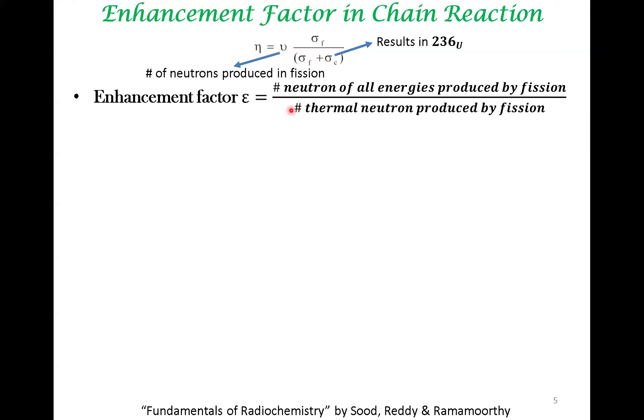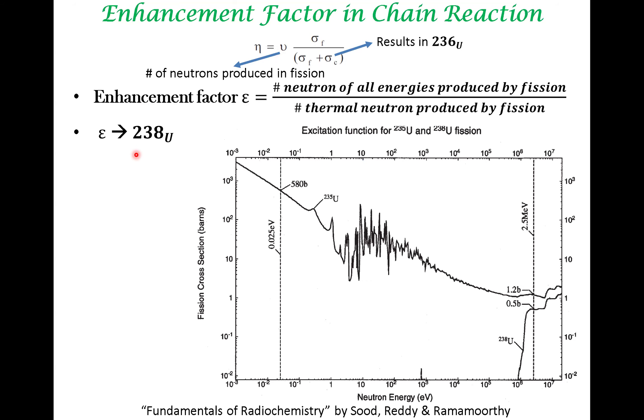We define an enhancement factor in the following manner: neutrons of all energies generated by fission divided by thermal neutrons produced by fission. Why is this important? If you have high-energy neutrons, this increases the cross-section for fission in U238. What we are referring to is this regime. When you have high-energy neutron, although U238 is not a fissile material in this energy regime, at high energies, U238 cross-section towards fission increases. It's beneficial to have neutron in this regime so that it can activate U238 also.